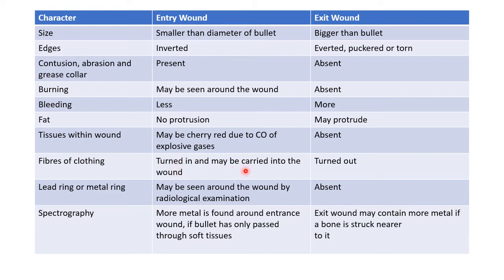The fibers of clothing may be turned inward and carried into the wound in the case of an entry wound, whereas the fibers are turned outward in an exit wound. A lead ring, also known as a metal ring, may be seen around the wound by radiological examination of an entry wound, whereas this lead ring or metal ring will be absent in an exit wound.